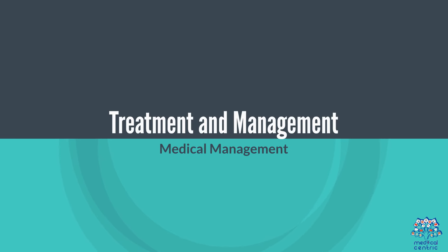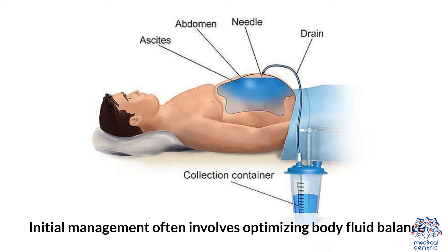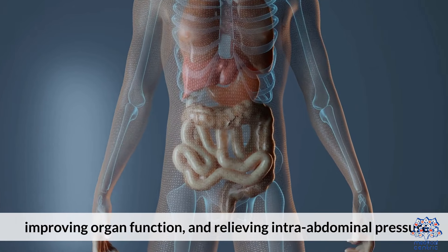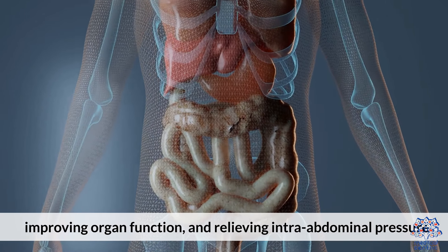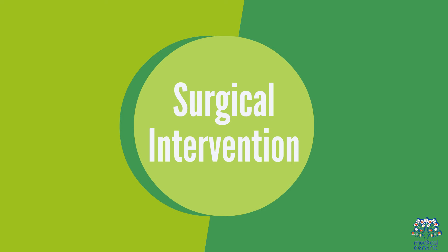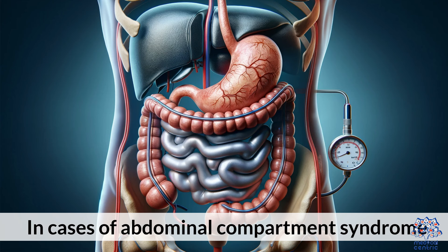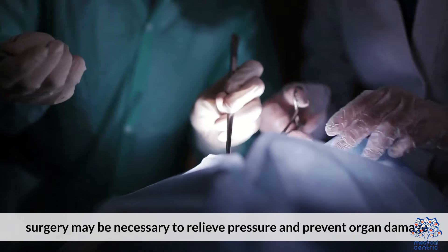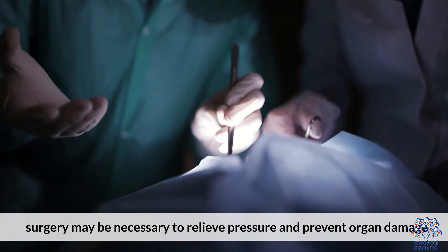Treatment and management. Medical management: initial management often involves optimizing body-fluid balance, improving organ function, and relieving intra-abdominal pressure. Surgical intervention: in cases of abdominal compartment syndrome, surgery may be necessary to relieve pressure and prevent organ damage.